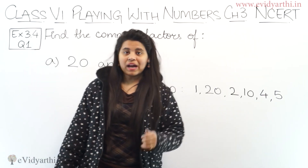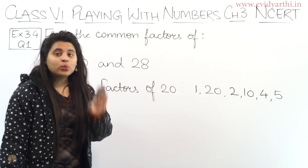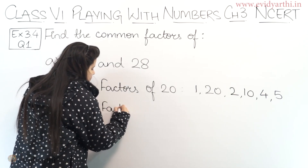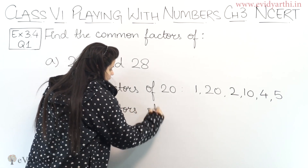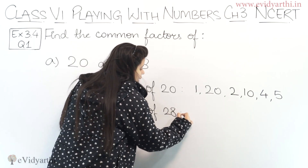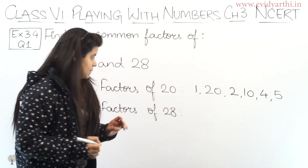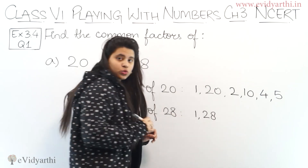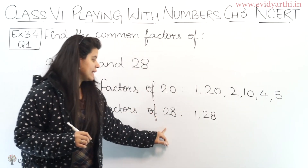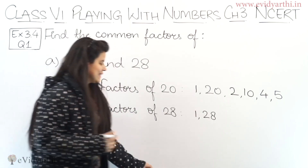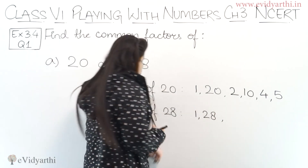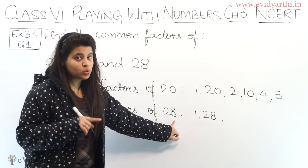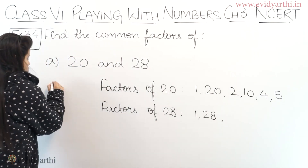Now we will write the factors of 28. Because 1 is a factor and 28 is the number itself, those are factors. Then 2: the last digit is 8, which means 2 is divisible.